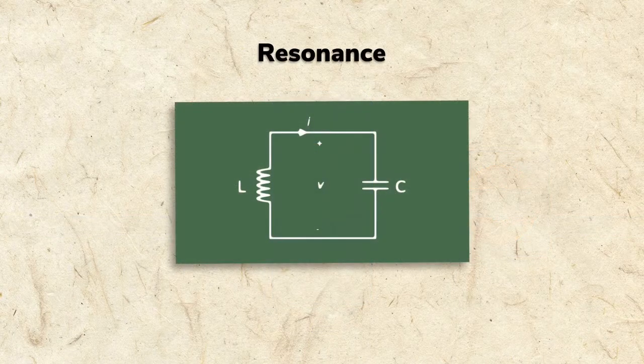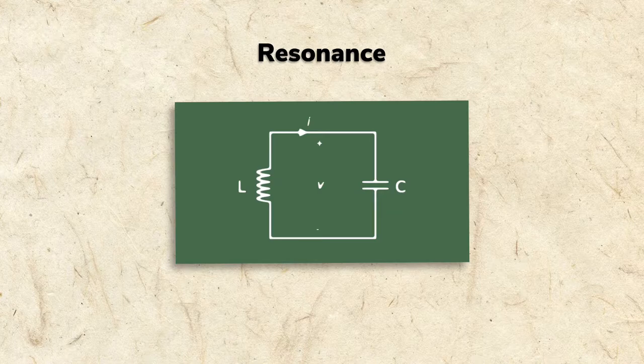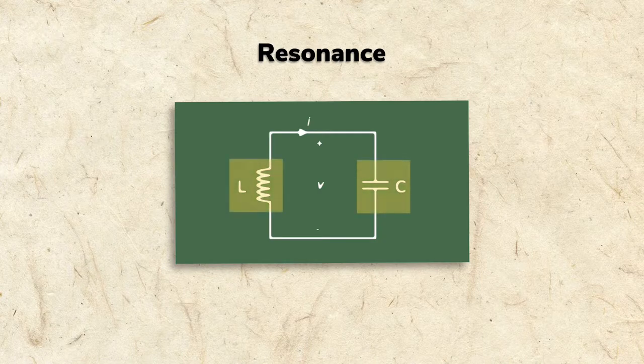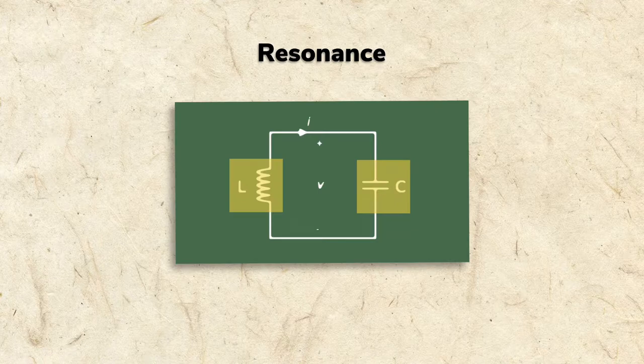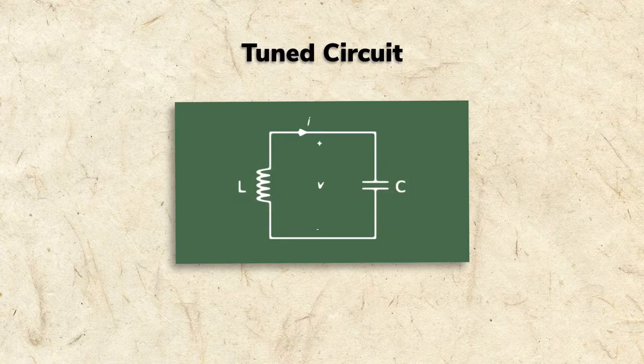IF transformers filter frequencies using the principle of resonance. As we've learned, when a signal runs through a capacitor and coil, the circuit tunes to the resonant frequency.